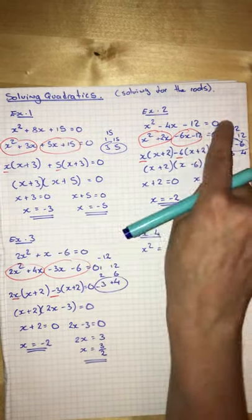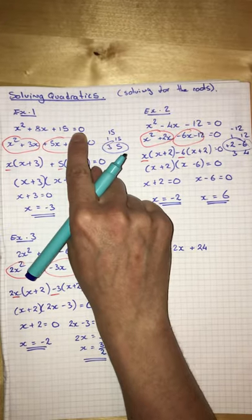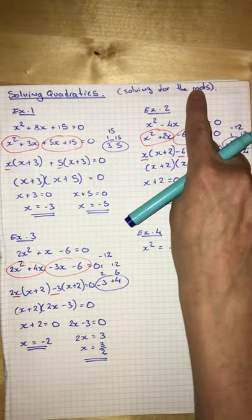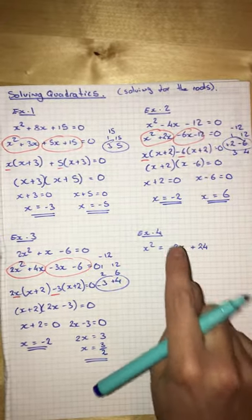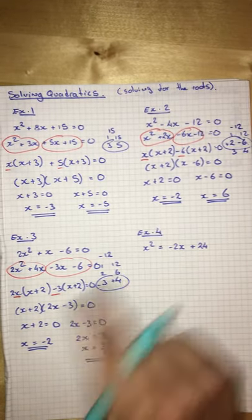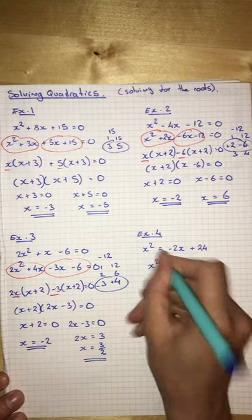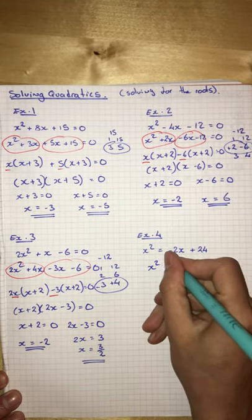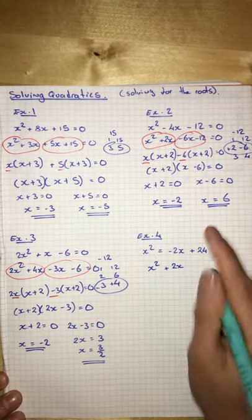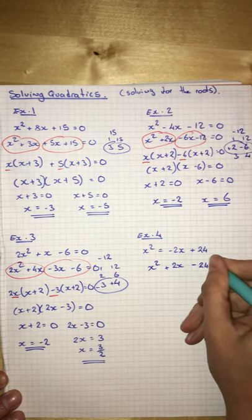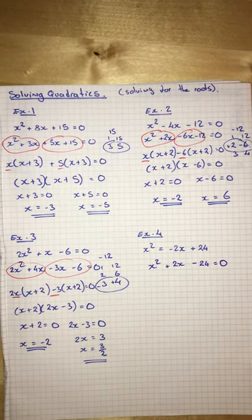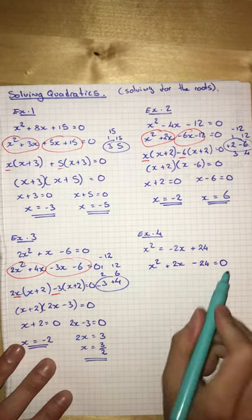Now, if I remember what I said at the start, they need to equal 0. So, before you can solve a quadratic by factorizing, the equation must equal 0. This one does not. But all we need to do to make it equal 0 is take these terms over. So, that minus 2x will become a plus 2x. And that plus 24 will become a minus 24. Now that it's equal to 0, I can solve it by factorizing.